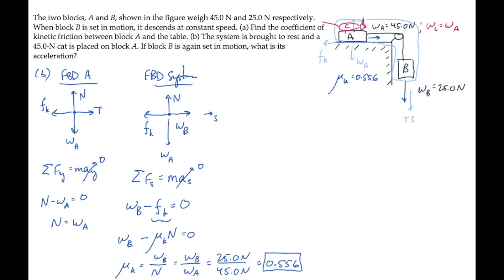Instead of a free-body diagram of block A, I want to draw the free-body diagram of the system of A plus C, block A plus the cat. And that means I need an additional weight in the downward direction.